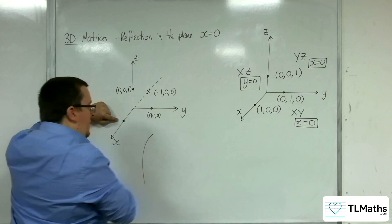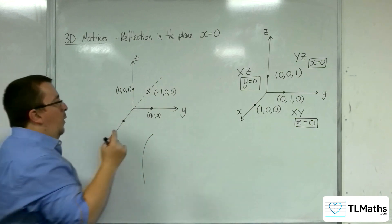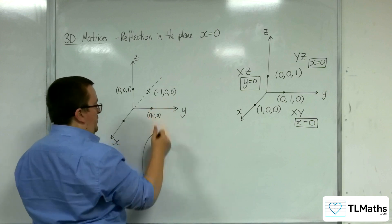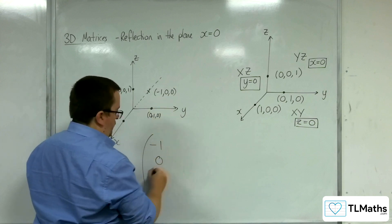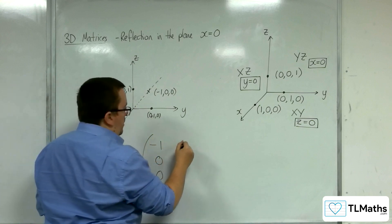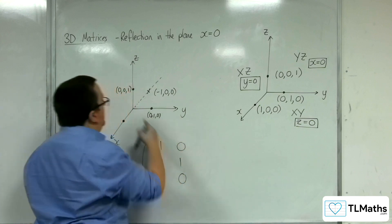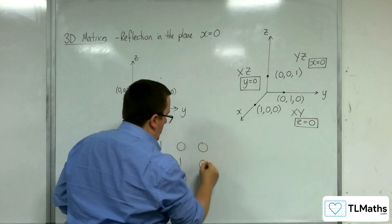So when we're looking for the matrix of this, (1,0,0) has mapped to (-1,0,0). And (0,1,0) stuck where it was. (0,0,1) stuck where it was.